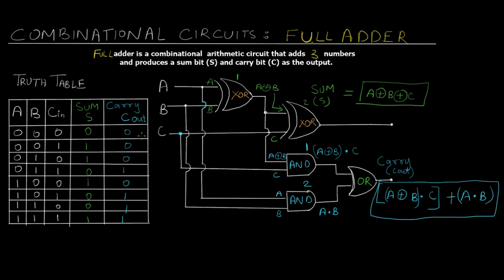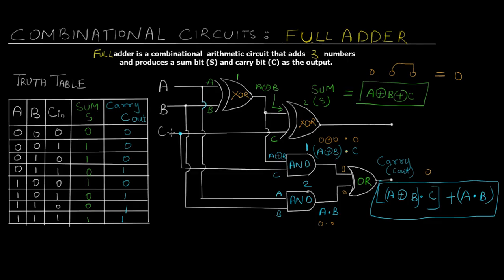All eight cases can be derived from these two expressions, so let's validate a few. For the first case, 0,0,0: putting these values in the sum expression gives 0 XOR 0 XOR 0, which equals 0. For the carry, A XOR B is 0 and multiplied by C which is also 0, giving 0. The second AND gate gives 0·0 which is 0. The OR operation between 0 and 0 gives 0. So sum is 0 and carry is 0 — validated.